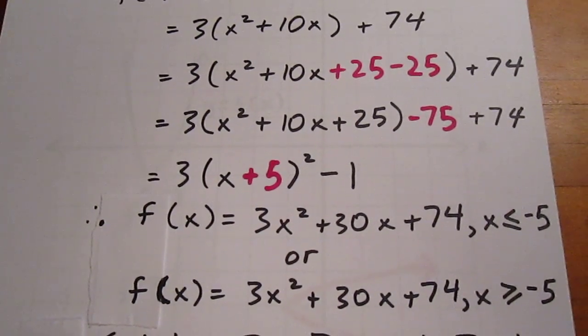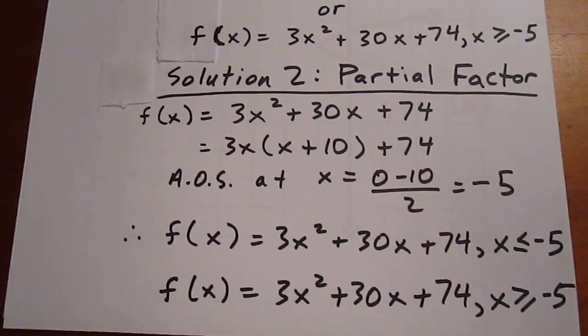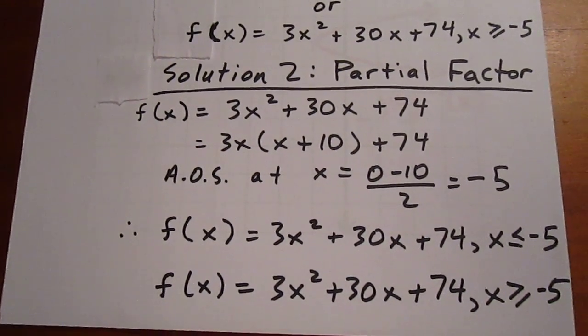If we don't like completing the square, we can partial factor. In partial factoring, we factor out the 3 and the x from the first two terms.